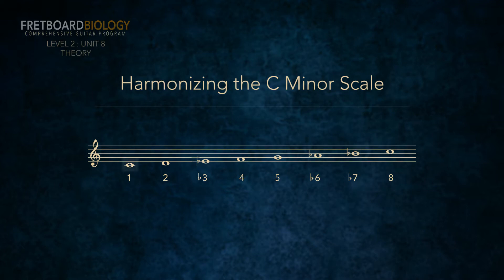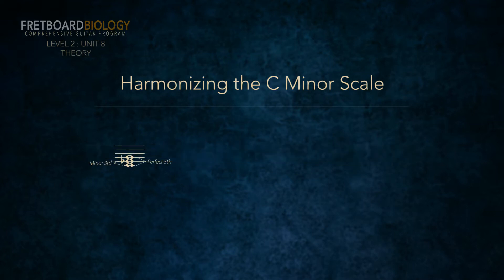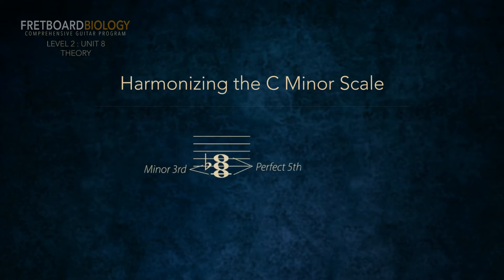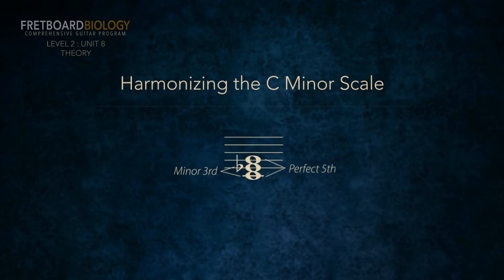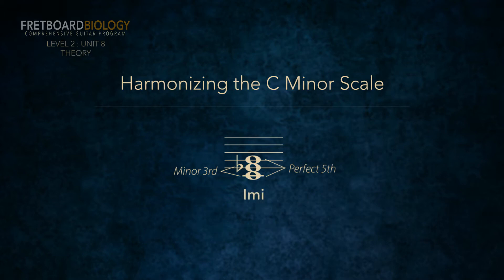Let's take the first scale degree, C. We find a note a third above C, and it has to be from the key we're in, which is C. That note is an E flat, and we call this the third of the triad. Next, we find a note a fifth above C, and it has to be from the C minor scale too. That note is a G, and we call this the fifth of the triad. Now what's the quality of our triad? We analyze the intervals and compare them to our triad interval formulas. E flat is a minor third above C, and G is a perfect fifth above C. We know from an earlier unit that a triad with a minor third and a perfect fifth is a minor triad.